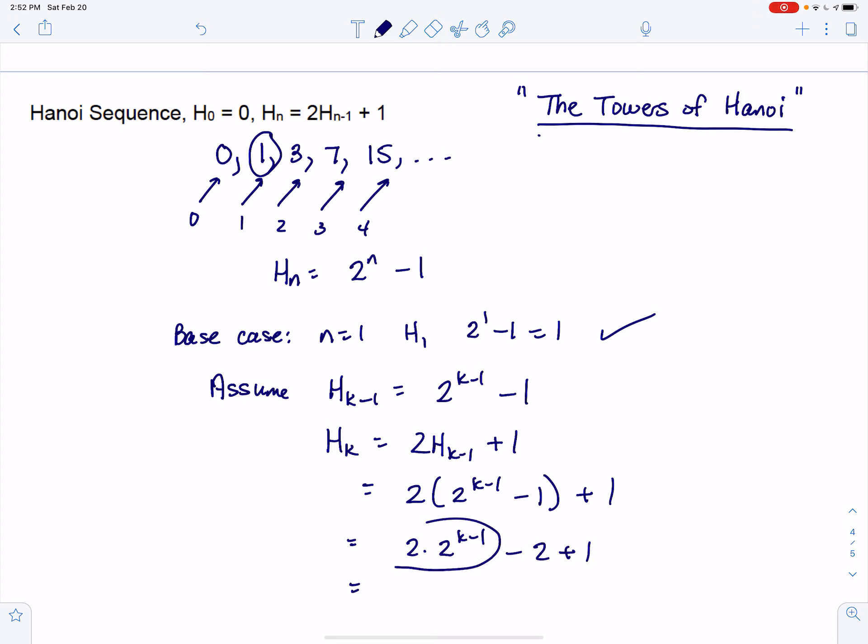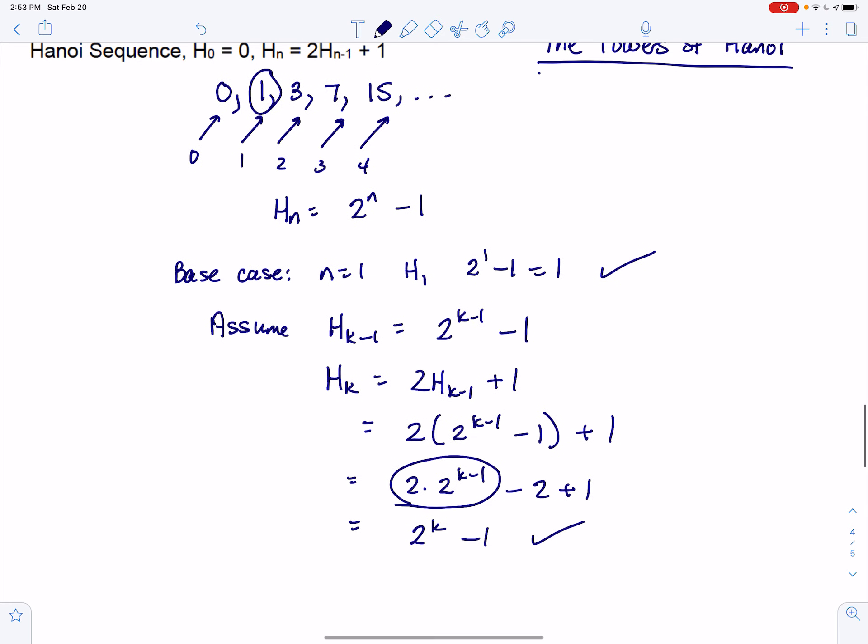Well, would you look at that? We're multiplying 2 to the K minus 1 times another 2. That's going to bump that up to 2 to the K minus 1, and there it is. So we have proven the Hanoi sequence formula by induction. Thanks for watching.